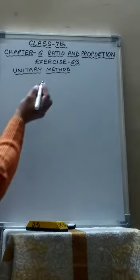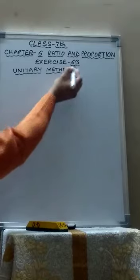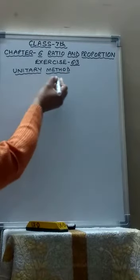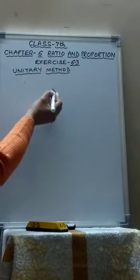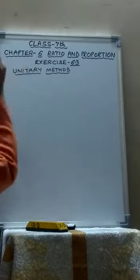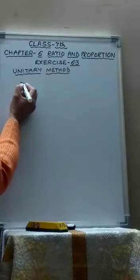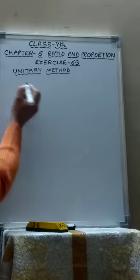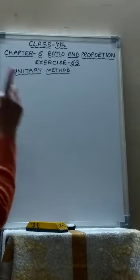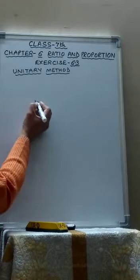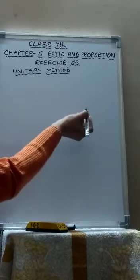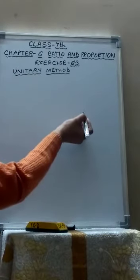Now children, I will start exercise 6.3 in which we will study about unitary method. Now what is unitary method? Unit means 1. In this method, first the value of unit quantity, that is 1, 1 thing, 1 quantity is calculated and then the value of the required quantity is determined.